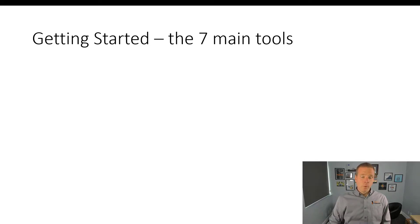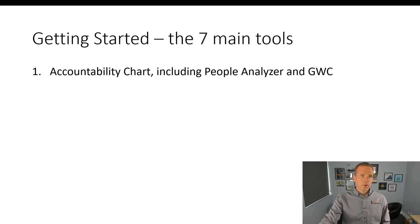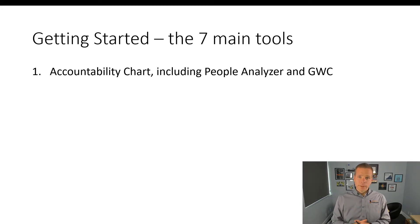I'm going to jump right into: what is Traction? What are the main seven tools? There's the accountability chart and some other things like the people analyzer, and Get it, Want it, Capacity — GWC.